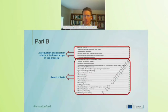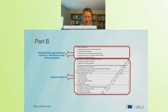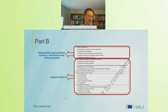The important thing is to explain very clearly what the changes are, be transparent about it, and explain why those changes have been made. There are further parts related to selection criteria and the technical scope of the proposal, which will be examined by evaluators. Financial capacity will also be looked at in more detail if you're asked to prepare a grant agreement. The next part covers the award criteria — the important thing is to explain very clearly and as simply as possible so it's easy for evaluators to get the information they need.